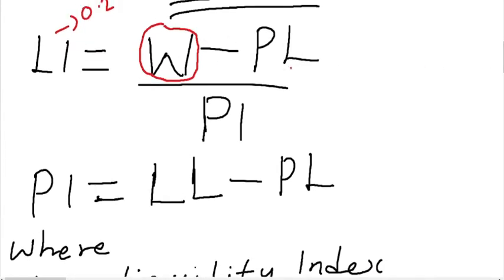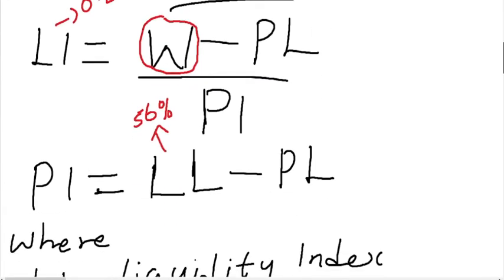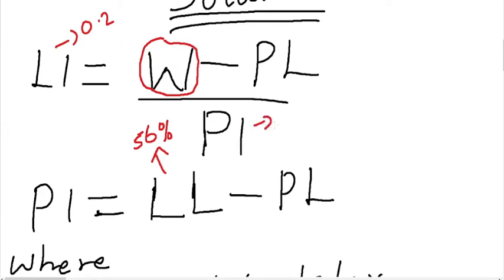We don't have the liquid limit variable in this formula, but we have it here, giving us 56%. We are given the plasticity index value as 20%, but we are not given the value for the plastic limit, that is PL. So how are we going to find the natural moisture content since we don't have the value for the plastic limit?